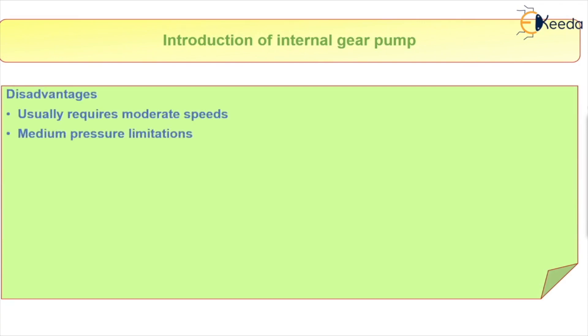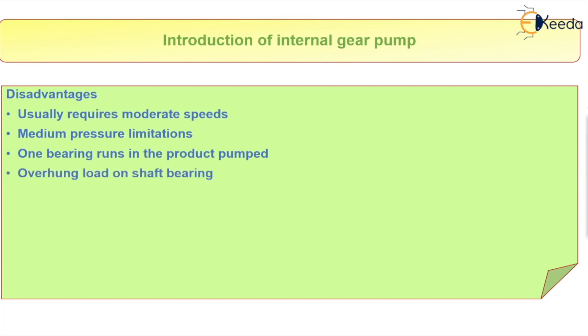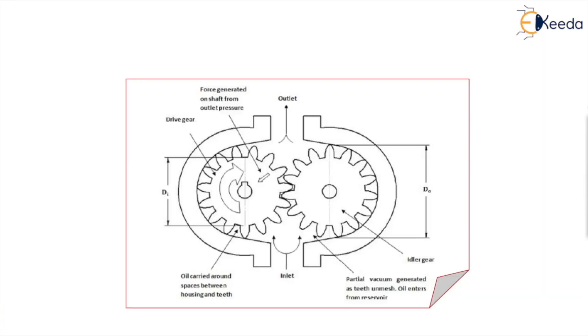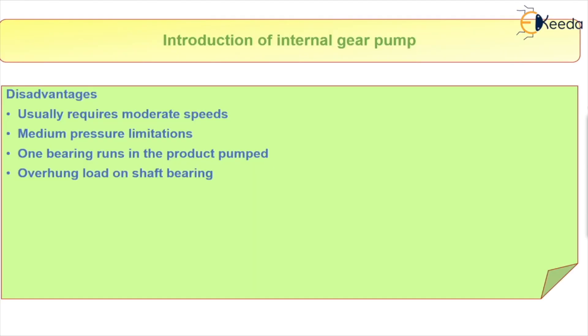Disadvantages of an internal gear pump: it usually requires a moderate speed motor. It has a medium pressure limitation. One bearing runs in the product being pumped, and there is an overhang load on the shaft bearing.